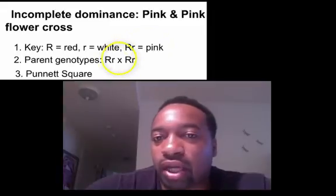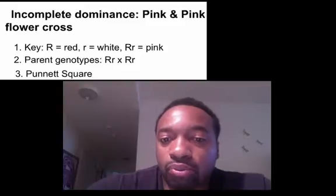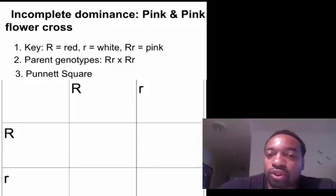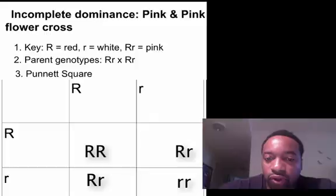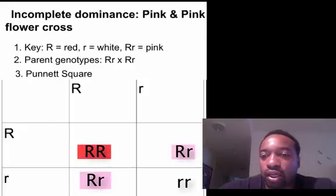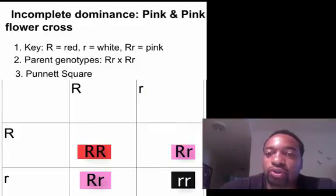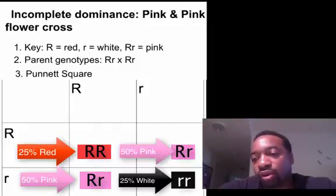Our parent genotypes are heterozygous — big R little r. We can set up our Punnett square. We'll see one offspring with big R big R, two with big R little r, and one with little r little r. Using our key to explain the phenotypes: big R big R is red, the heterozygote is pink, and the homozygous recessive is white. So 25% are going to be red, 50% are going to be pink, and 25% are going to be white.